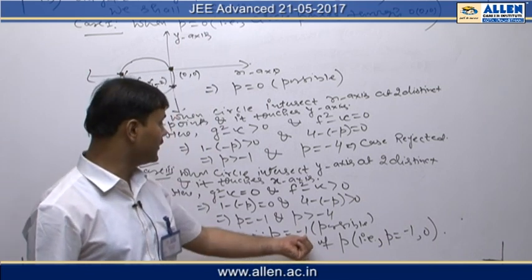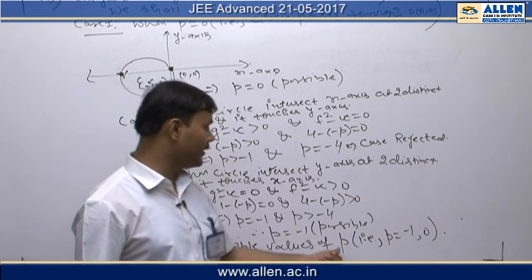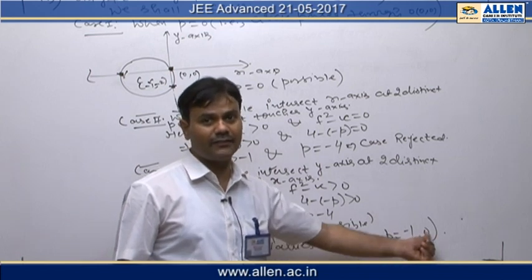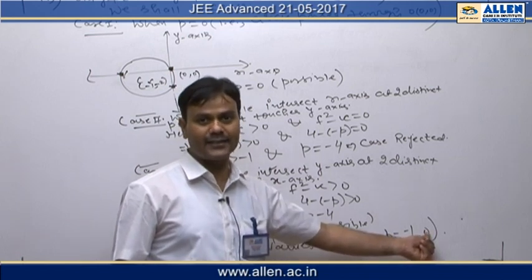So finally for the answer, we get two distinct values of p: p = -1 and p = 0. So the right answer is 2.